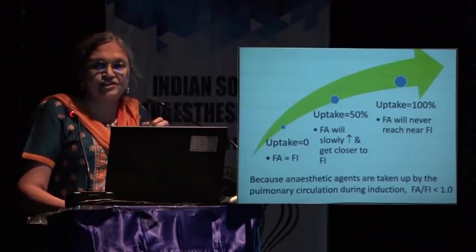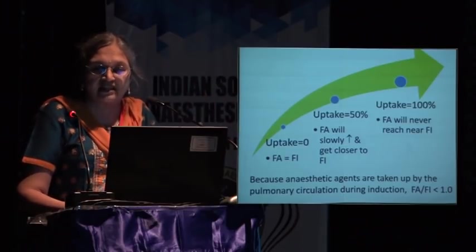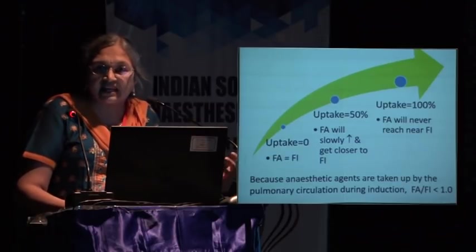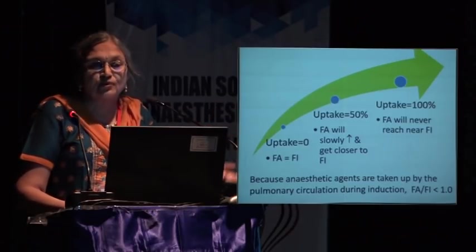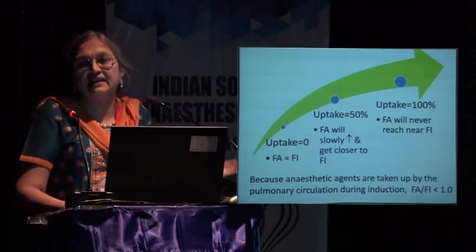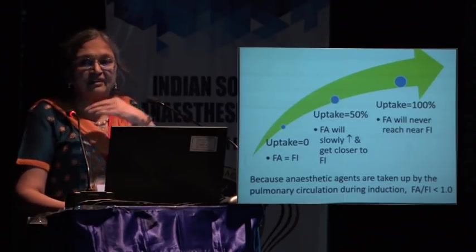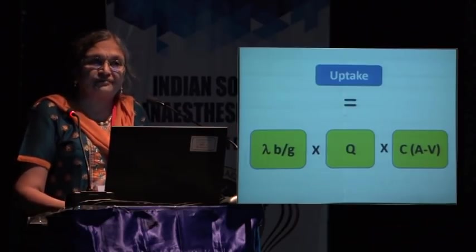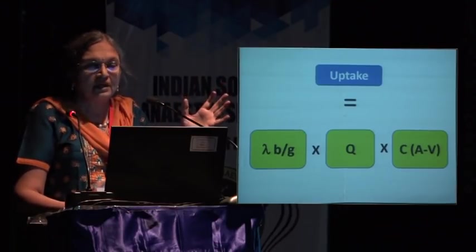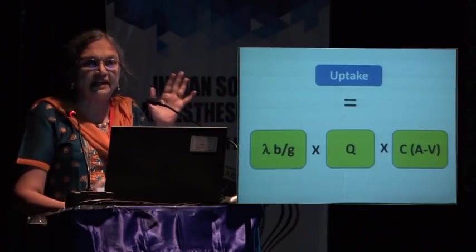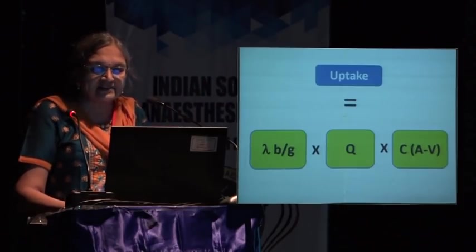Initially uptake is zero, so alveolar concentration rises fast and FA approaches FI. As the patient begins taking up the agent, circulation uptake slows the rate of rise. If 100% of the agent were taken up by the body, FA would never reach FI. The uptake equation is: uptake = λ (blood-gas solubility) × cardiac output × (alveolar to venous blood concentration difference). Let us understand each factor one by one.